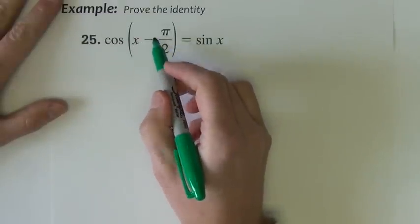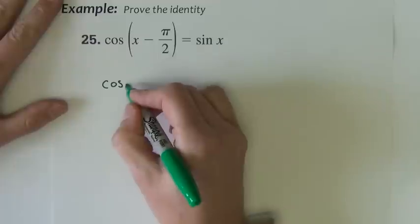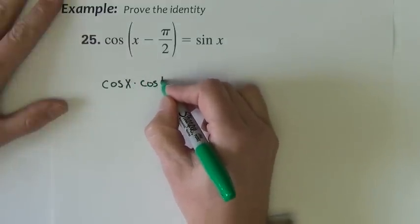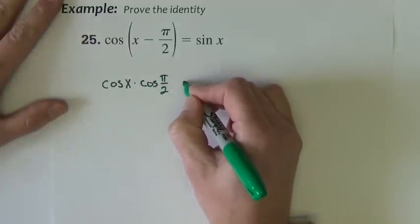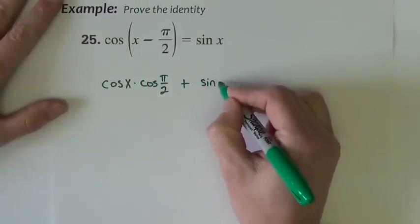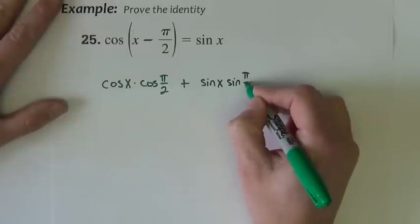So here I see cosine of a difference. Let's expand that difference first. The cosine expansion is cosine of the first times cosine of the second. Take the opposite sign of what's between them here, so plus, and then you want sine of the first, sine of the second.